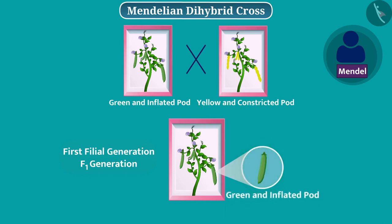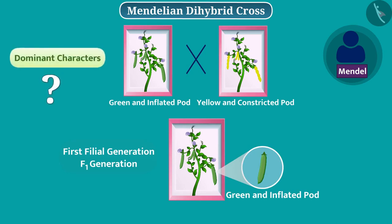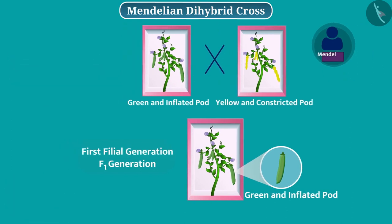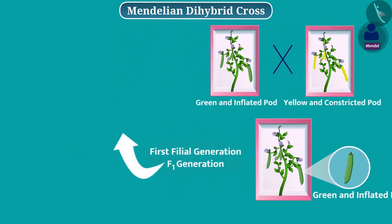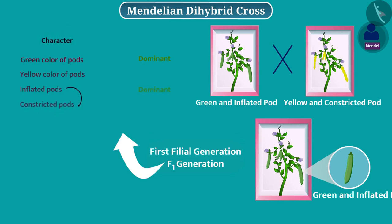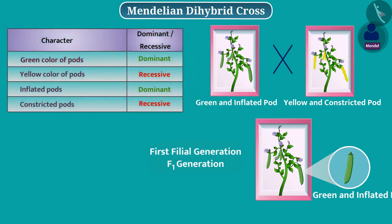Pause the video and identify the dominant characters. In F1 generation, the green colour of pods was expressed, so green is dominant over yellow colour. And pods were inflated, so the inflated character is dominant over the constricted character. That is, yellow colour and constricted pods are recessive characters.